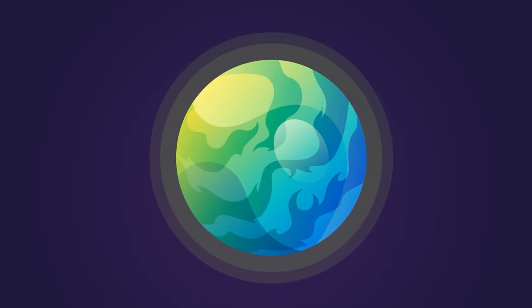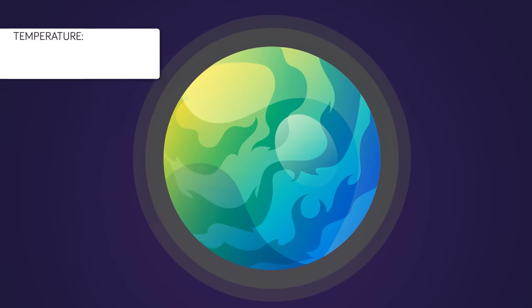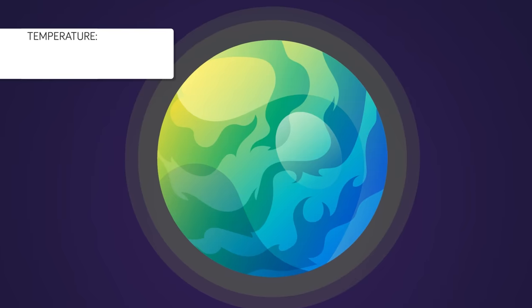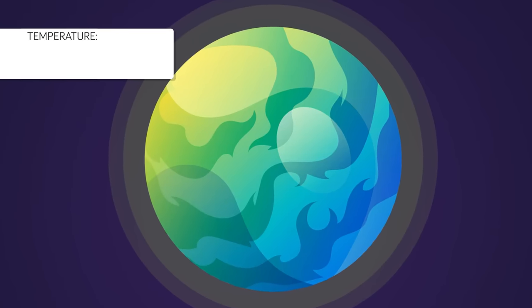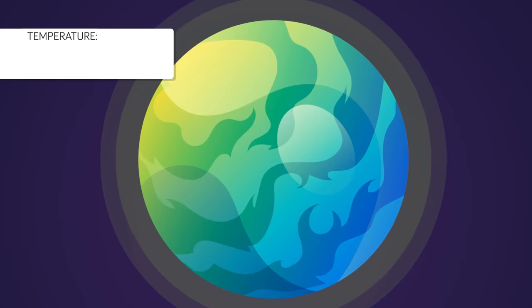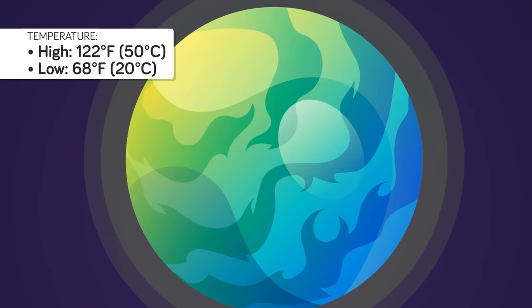New research that was talked about in 2019 states that for around 3 billion years, Venus might have had a climate that could sustain water on the surface of the planet, that the temperatures could have been not that high at all. These scientists say Venus might have had temperatures of only around 122 degrees Fahrenheit, or as low as 68 degrees Fahrenheit.